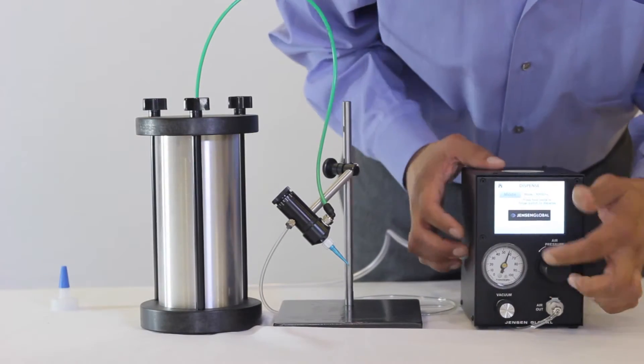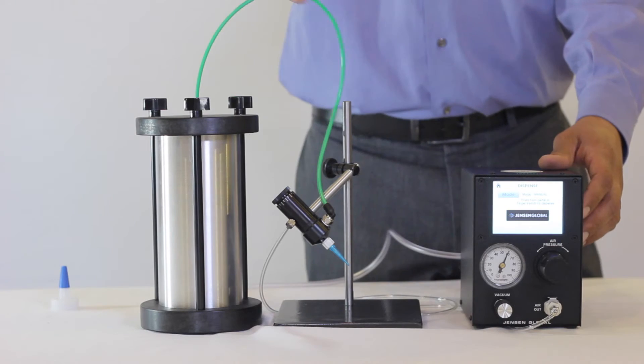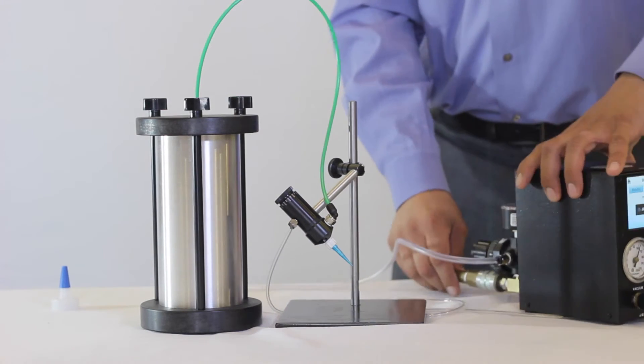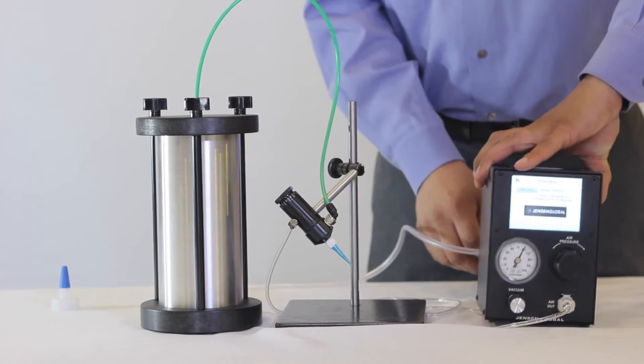The regulator and gauge on the front of the dispenser should stay at 70 psi and the regulator on the back side should be at 0 psi.